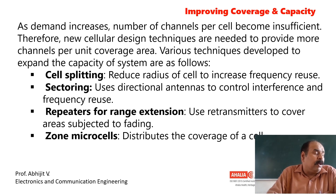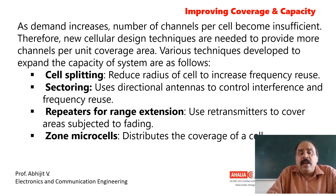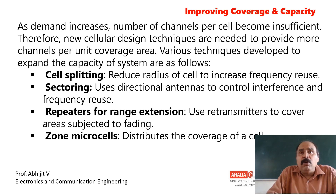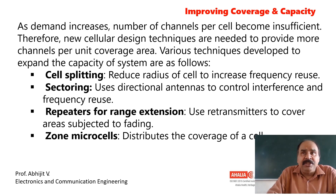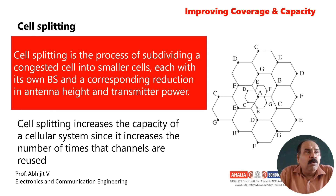What are the things we are going to do to improve our mobile coverage and capacity? We have seen four important things: cell splitting, sectoring, repeaters, which we are going to use for extending the range, and zone micro cells. In this class we will be seeing all these things in detail.